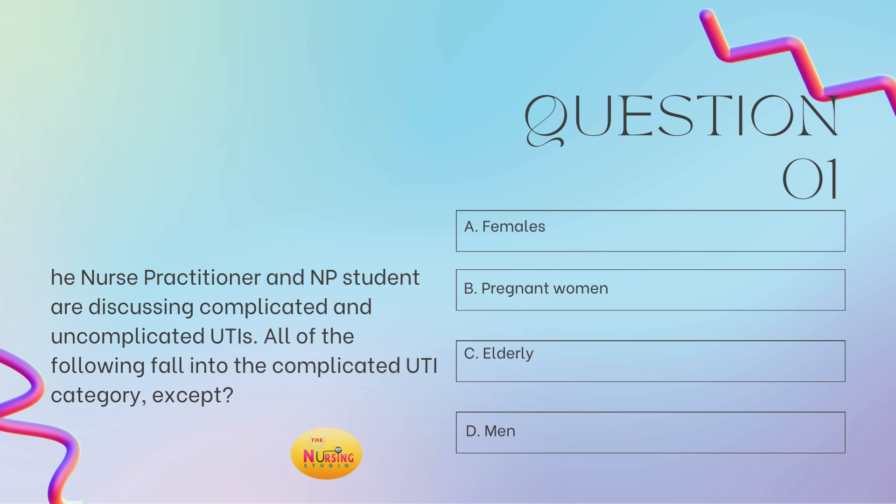All right, you guys. I always recommend reading the stimulus question first to ensure that you're answering what is even being asked of you. When you're on boards, I know you just want to go through and read the question, but please just trust me and take the moment and read that stem first so that you can slow down, make sure you understand what's being asked, and then look at the scenario so that you're not making mistakes and not getting caught up in that long paragraph and formulating your own storyline. Read the stem first, please. Trust me.